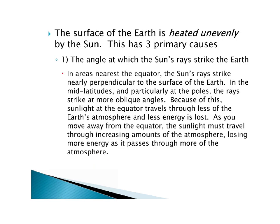The surface of the earth is heated unevenly by the sun, and there are three primary causes for this. The first is the angle at which the sun's rays strike the earth. In areas nearest the equator, the sun's rays strike nearly perpendicular to the surface. In the mid-latitudes and particularly at the poles, the rays strike at more oblique angles. Think of a basketball and a flashlight — if you shine that flashlight straight onto the spherical basketball, you get a concentrated circle of light. But as you move toward the edges of the sphere, you get a more oblong, oval-shaped light path.